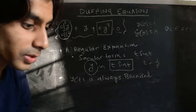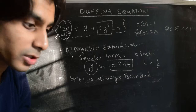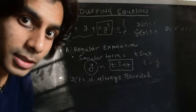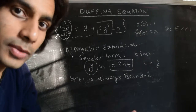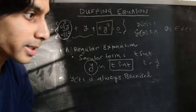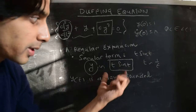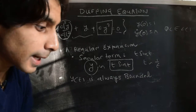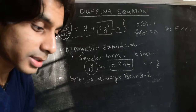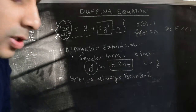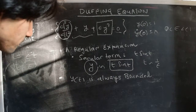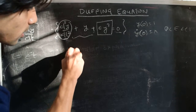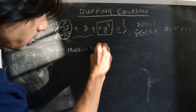The multiscale expansion method is one trick to get rid of this secular term even to a finite order perturbation expansion. It's very hard to go to higher order terms in multiscale expansions, so we'll restrict ourselves to only the leading order solution. But even that will show how the multiscale expansion method gets rid of the secular term. So let's discuss the basic idea of why it's called a multiscale expansion method.